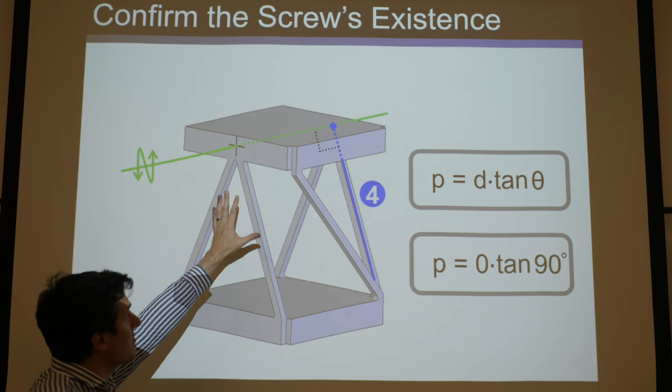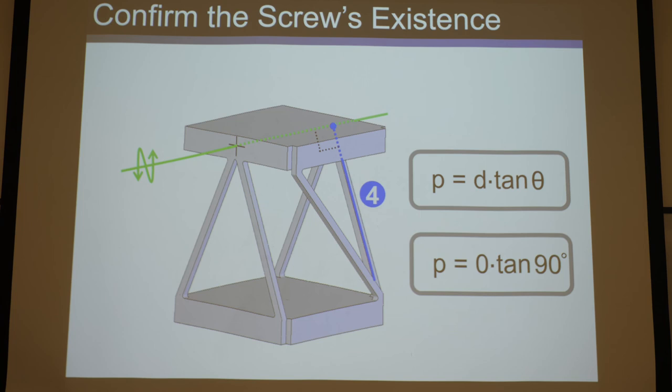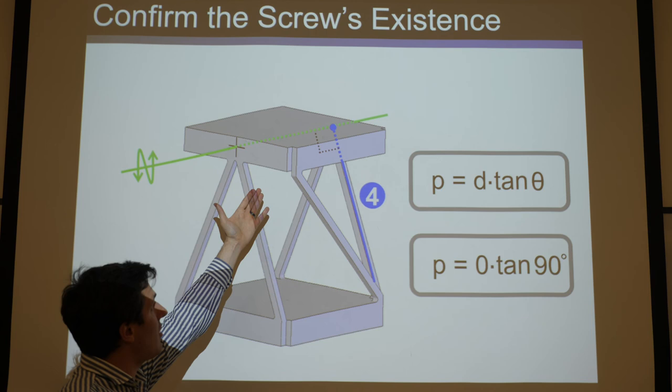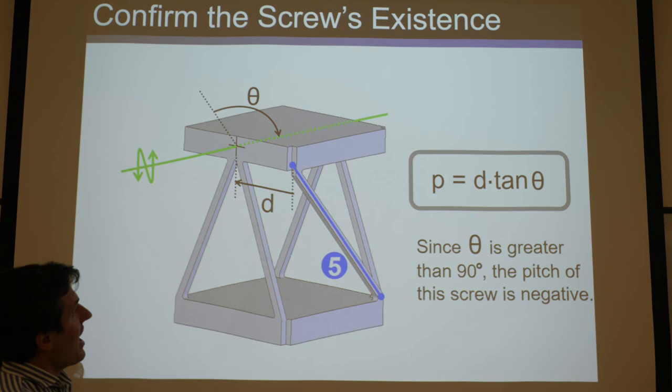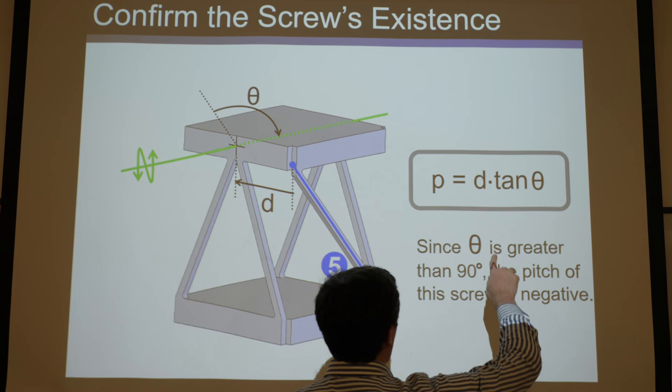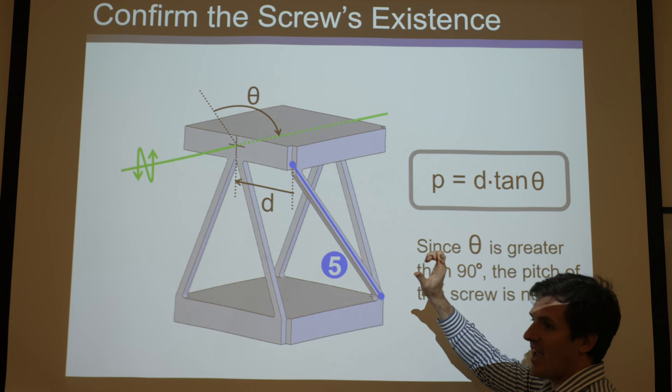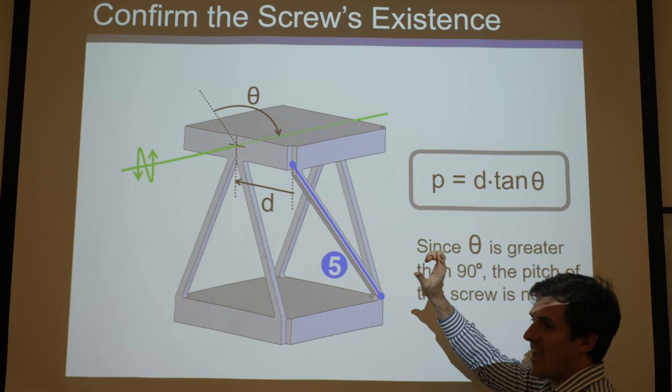When we add the fifth constraint — the angled beam — it kills the translation, the rotation, and all other screws, honing in on exactly one screw with one specific pitch. That confirms Maxwell's rule: six minus five equals one degree of freedom. That pitch is determined solely by the angled beam, not by the four perpendicular wires. To define the sign convention for d and theta, you always use your right hand going from the blue line to determine what's positive and negative.